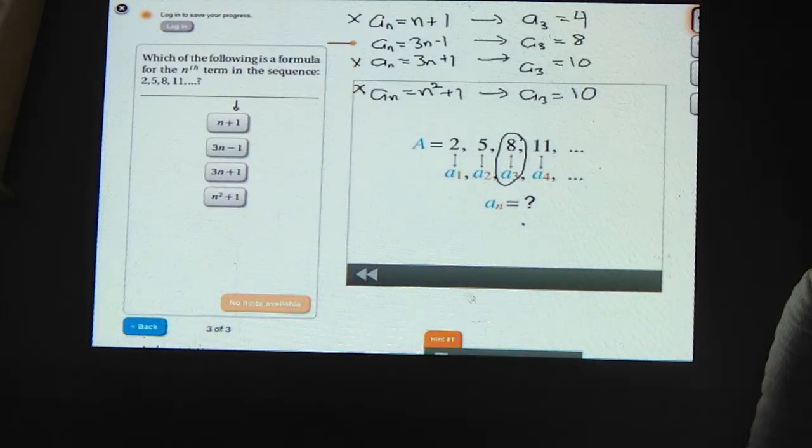So the only one that gives us the correct value for a sub 3 is this one. We can check what a sub 2, a sub 1, and a sub 4 are for that sequence, and you'll find that they're 5, 2, and 11 respectively. So the only correct answer is that one.